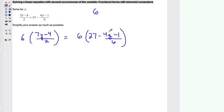Now this is considered one term, this 4y minus 1 all over 6, and then this one as well. So we have to make sure that we distribute the 6 to both of these. So that's basically 6 times 27 minus 4y minus 1 over 6 times 6.